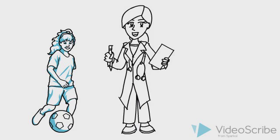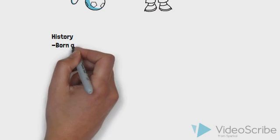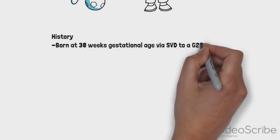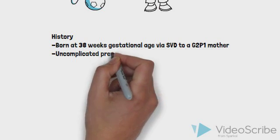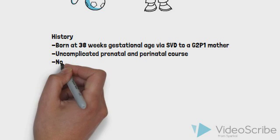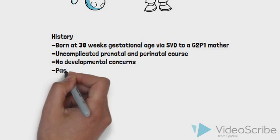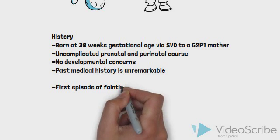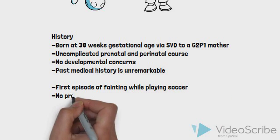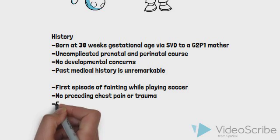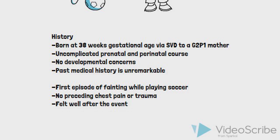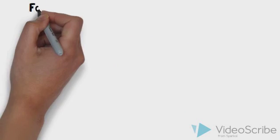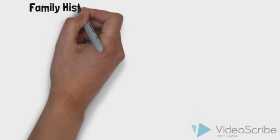You introduce yourself to Louise and her mother and begin taking Louise's history. You learn that Louise was born at 38 weeks gestational age via spontaneous vaginal delivery to a G2P1 mother. The pregnancy and neonatal course were uncomplicated. Louise is developmentally normal and has never required hospitalization or surgery. She recently started to play soccer in school and had her first game of the season last week when she experienced an episode of fainting while sprinting after the ball. She doesn't remember having any chest pain or trauma right before the incident and felt well when she woke up. You recall that in medical genetics, taking a thorough family history in particular is essential and remains the gold standard for assessing a patient's risk of having a genetic disorder.